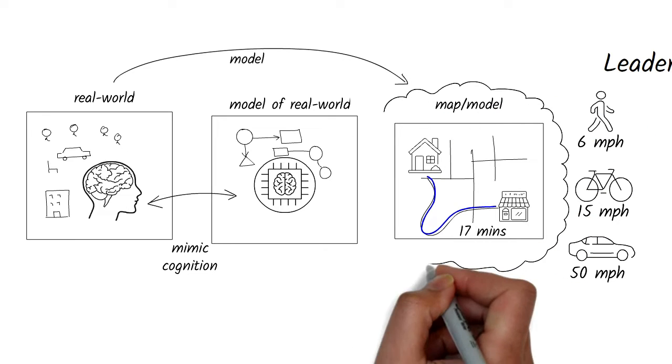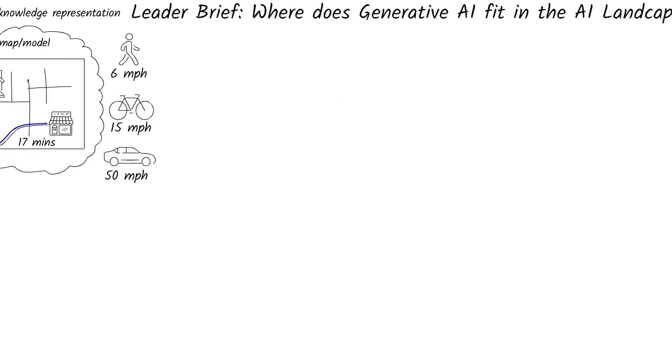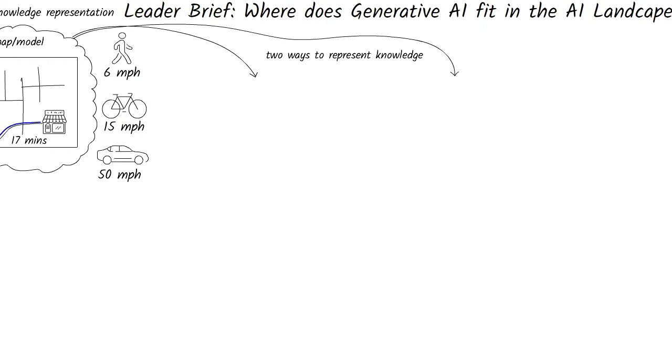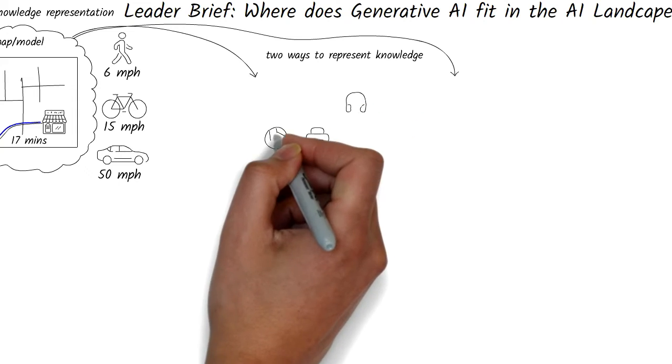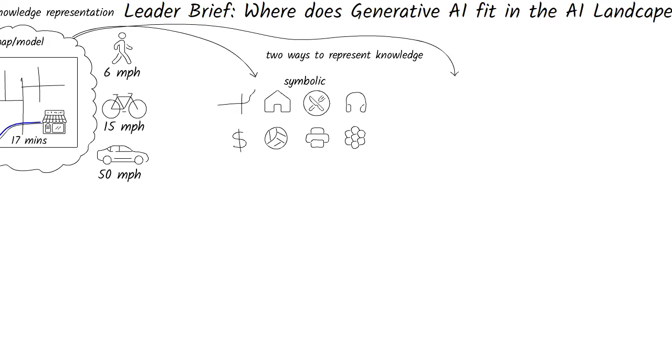The first step to AI is to represent knowledge about the real world. There are two significant ways to represent this knowledge in the computer's memory. One is a symbolic way, where things are represented as symbols. You can then manipulate the symbols to make inferences about the world.